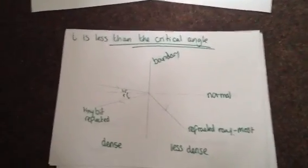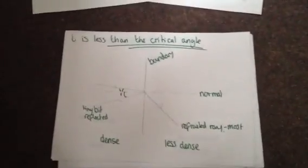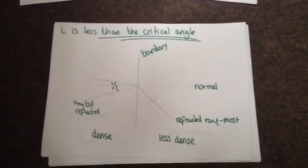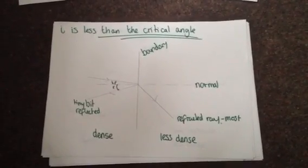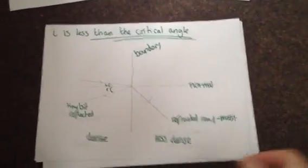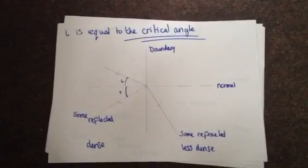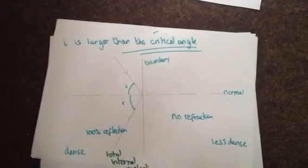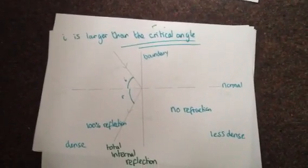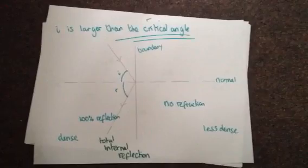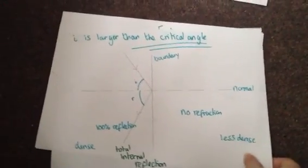If our angle of incidence, measured against the normal, is less than the critical angle, most of the light is going to be refracted and a tiny bit is going to be reflected — remember we are talking about going from a dense to a less dense medium. If the angle of incidence is equal to the critical angle, you are going to have some reflected and some refracted. I have drawn this with a pencil and a ruler.